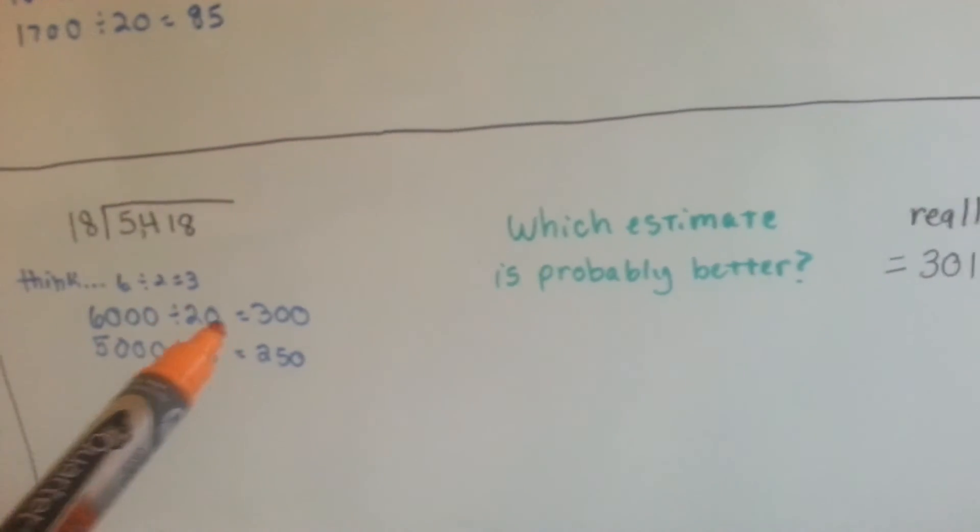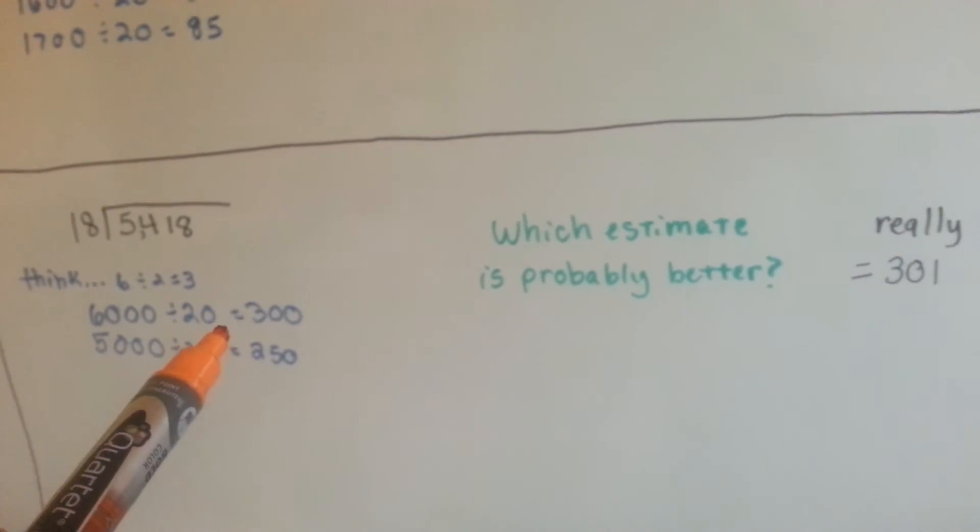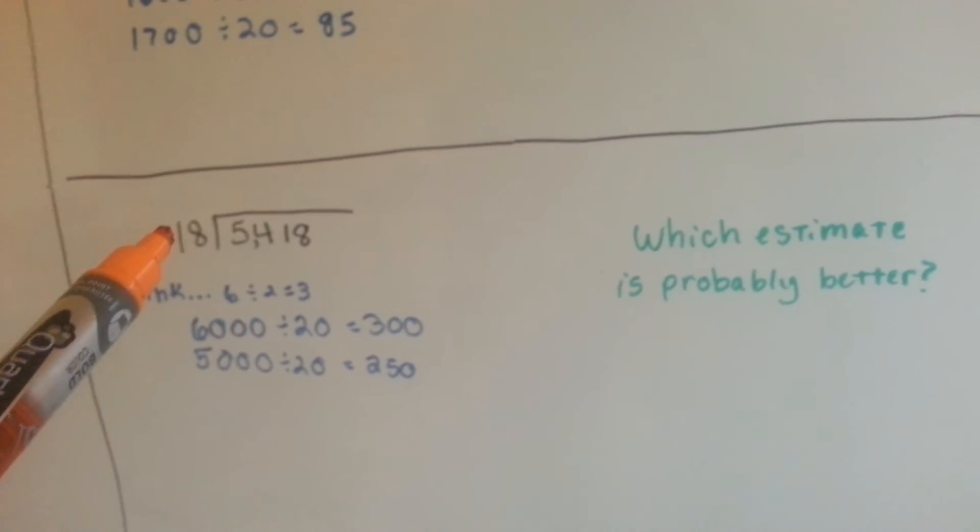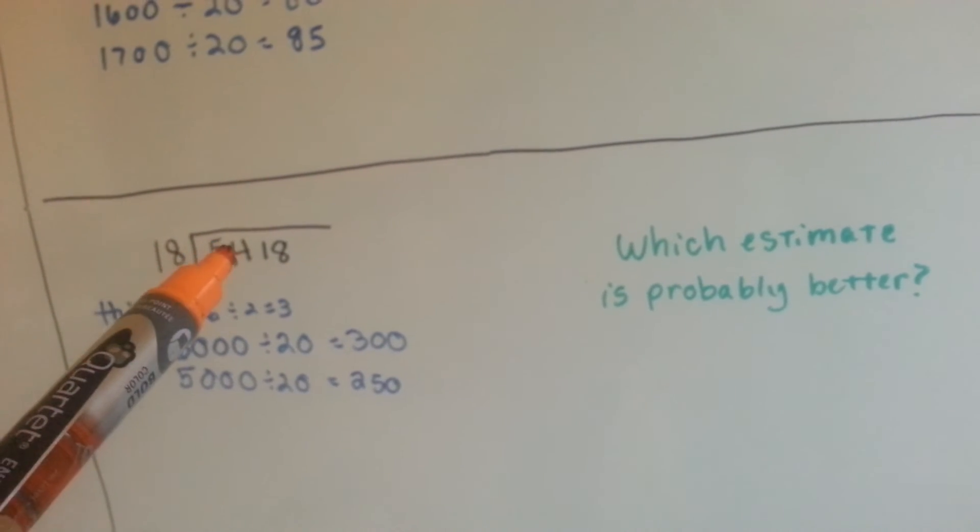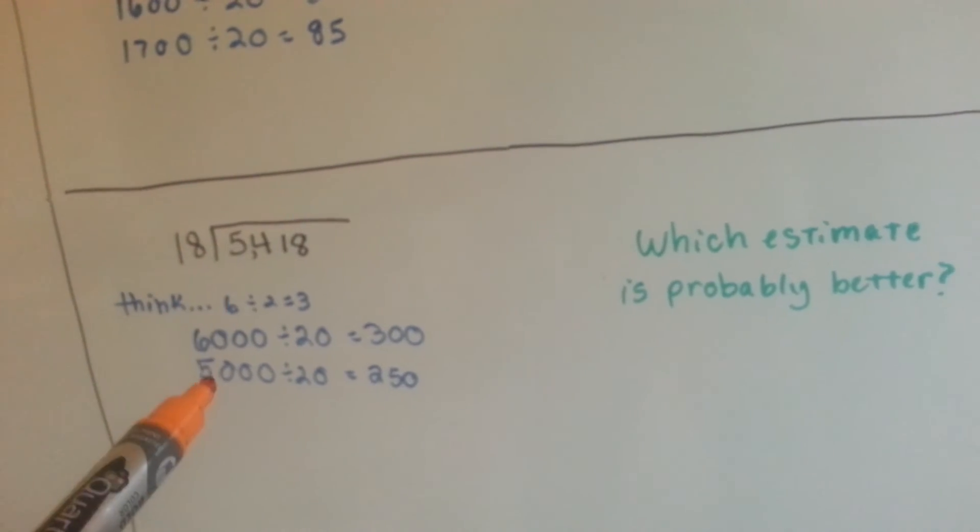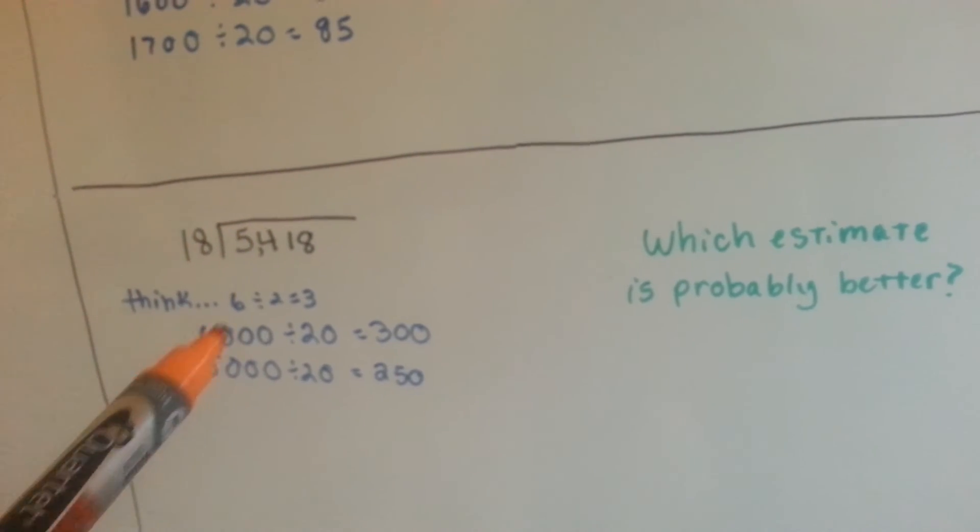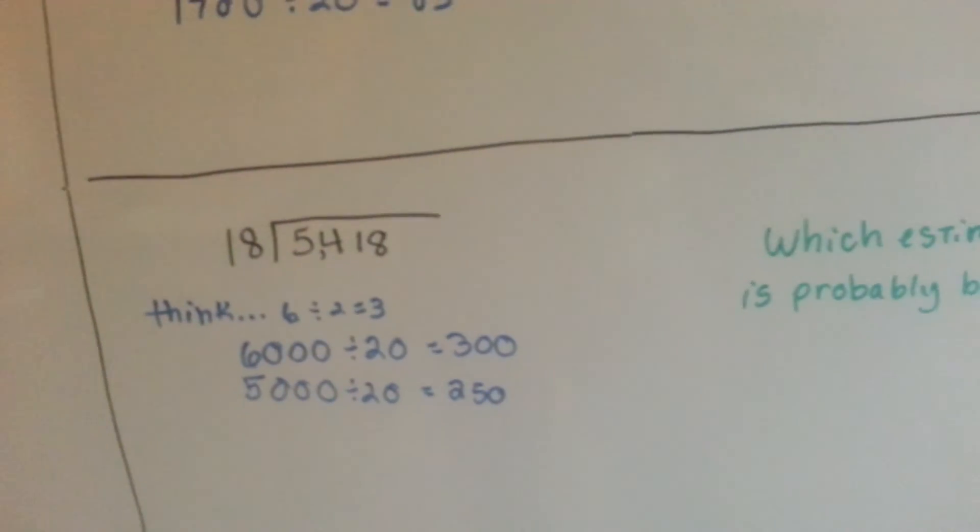Would you believe it's actually the 6,000 divided by 20? Because the real answer is 301. This is a little bit less than 20 and it's 400 more than 5,000. So if we were really rounding this to the thousands place, it really would round to 5,000. But in division, the estimate ended up being better to be 6,000. Isn't that odd?